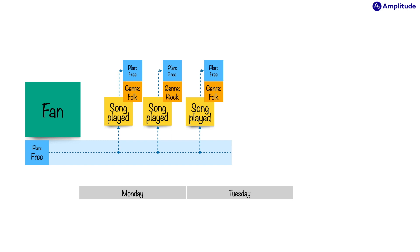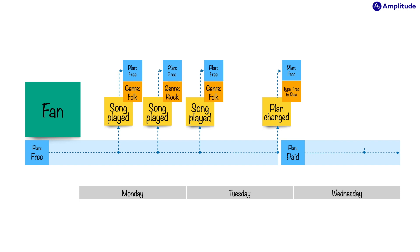On Tuesday evening, our fan decides to change their plan from free to paid. Note here how we continue recording their plan as free. This is helpful because we might want to know what plan they were on when they changed their plan. So after that event is recorded, we change their plan to paid, because now they're paying us. And this is attached to their next event, a song play later that day along with the music genre Metal.